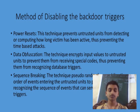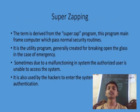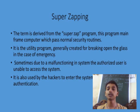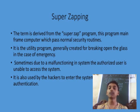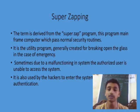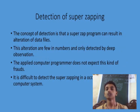The next topic is super zapping. Super zapping tools are used by the system administrator to gain access to their own system, not through the normal routine but through a break-glass emergency method. In many cases, due to some malfunctioning, the system cannot grant access to the authorized user, so super zapping tools are used. However, they also present problems, so detection of super zapping is important.